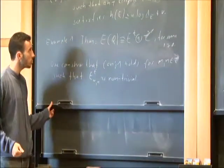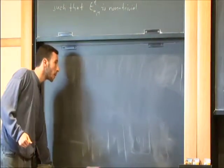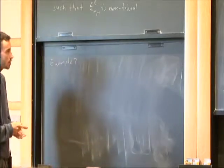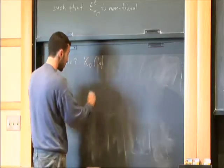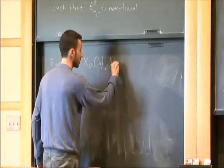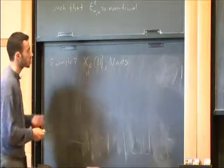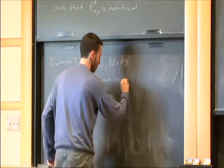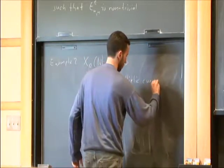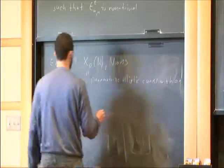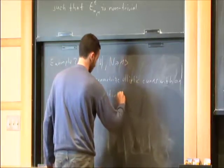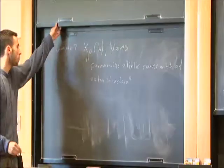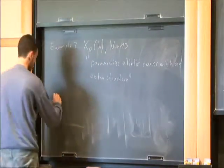Example 2: In this example one considers modular curves X_0(n) for n ≥ 13. I will not define exactly what these curves are, but they parametrize certain elliptic curves with extra structure. Now there is a famous theorem, the Shimura-Taniyama conjecture.